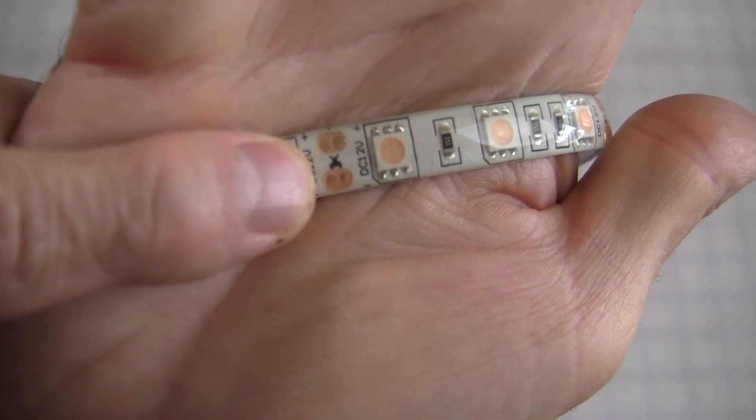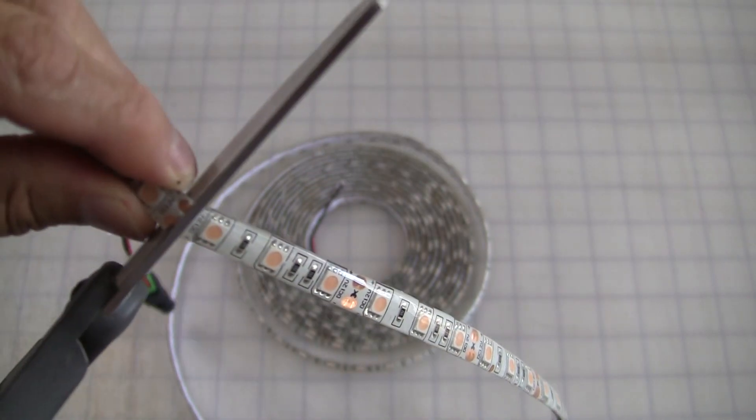Cut LED strips into 12 inch sections. Be sure to cut only where marked.